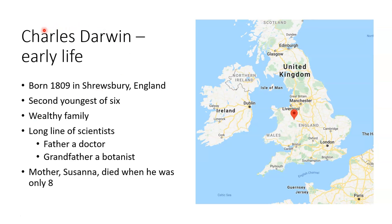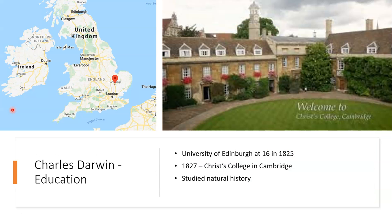Let's talk about Charles Darwin. He was born in 1809 in Shrewsbury, England — the second youngest of six children. He came from a wealthy family with a long line of scientists. His mother Susanna died when he was only eight years old. His father was a doctor and his grandfather was a botanist — someone who studies plants. He was educated at the University of Edinburgh at 16, going to college in 1825, and in 1827 he switched to Christ's College in Cambridge, where he studied natural history.